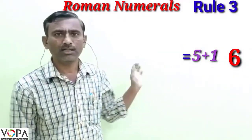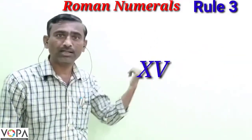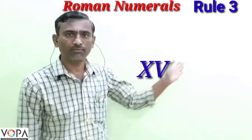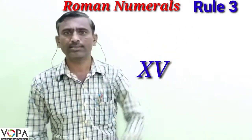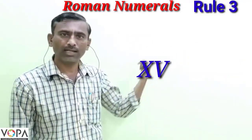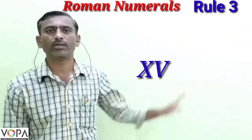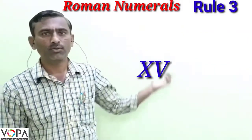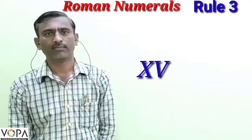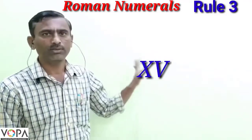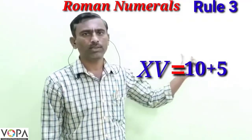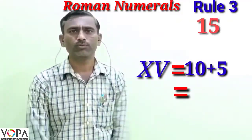V is written on the right side of the bigger symbol X, which represents 10. Since 10 is bigger than 5 and V is written on the right side, the value of V is added to 10 to get the value for the symbol XV. Therefore, XV equals 10 plus 5, which equals 15.